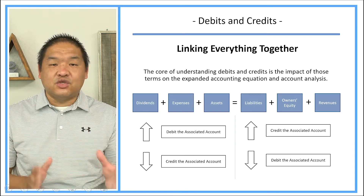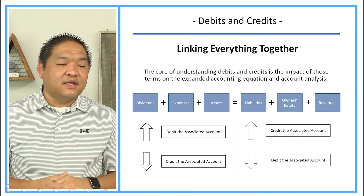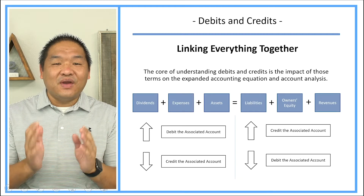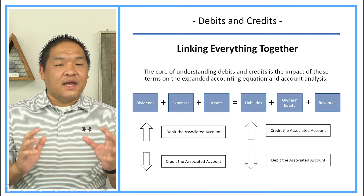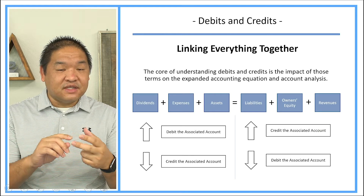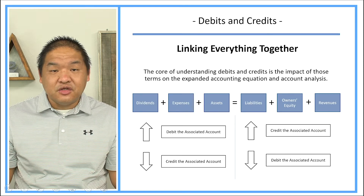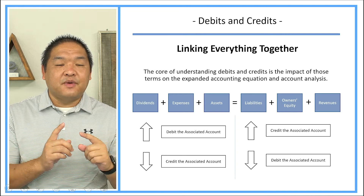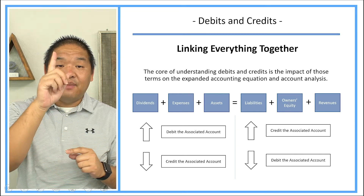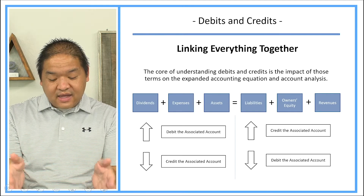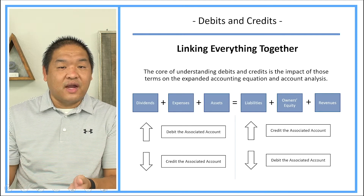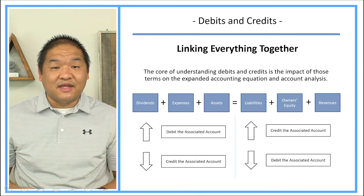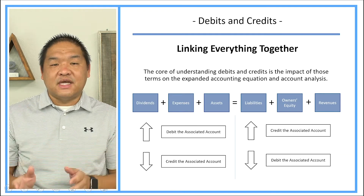So that's how debits and credits work. It's not simply increase or decrease — it's left or right. It really comes down to: first of all, what accounts are you impacting? Is it cash? Is it equipment? Is it accounts payable? Is it dividends or revenues? What are you trying to impact? And then, when you impact it based on this transaction, is that account supposed to go up or down? If it's supposed to go up, then we're going to use the rule on the left side — it's a debit. If it's on the right side, it's a credit. And if it goes down, if it's on the left side, we're going to credit; if it's on the right side, we're going to debit.